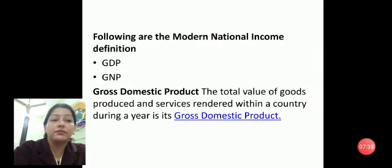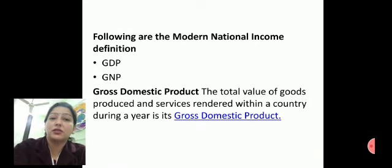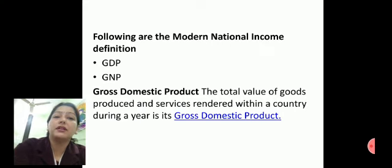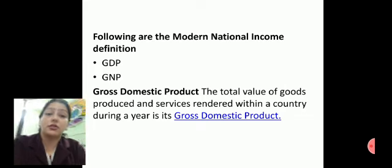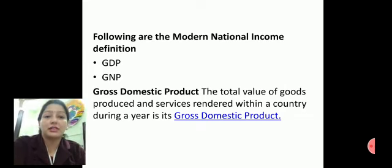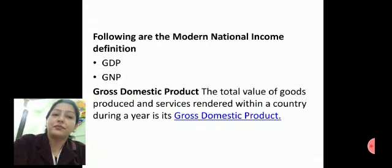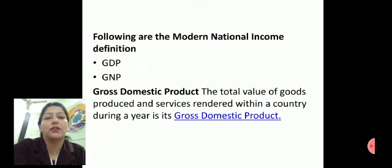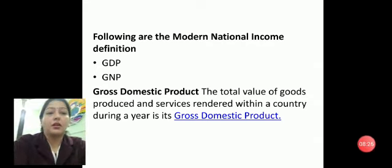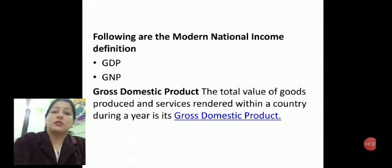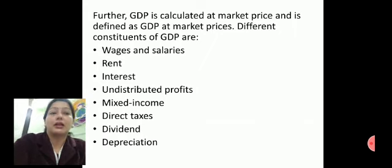The modern national income definition is divided into two parts: GDP (Gross Domestic Product) and GNP (Gross National Product). GDP is the total value of goods, products produced, and services rendered within a country during a year, calculated at market price. Components of GDP include wages and salaries, rent, interest, undistributed profits, mixed income, direct tax, dividend, and depreciation.